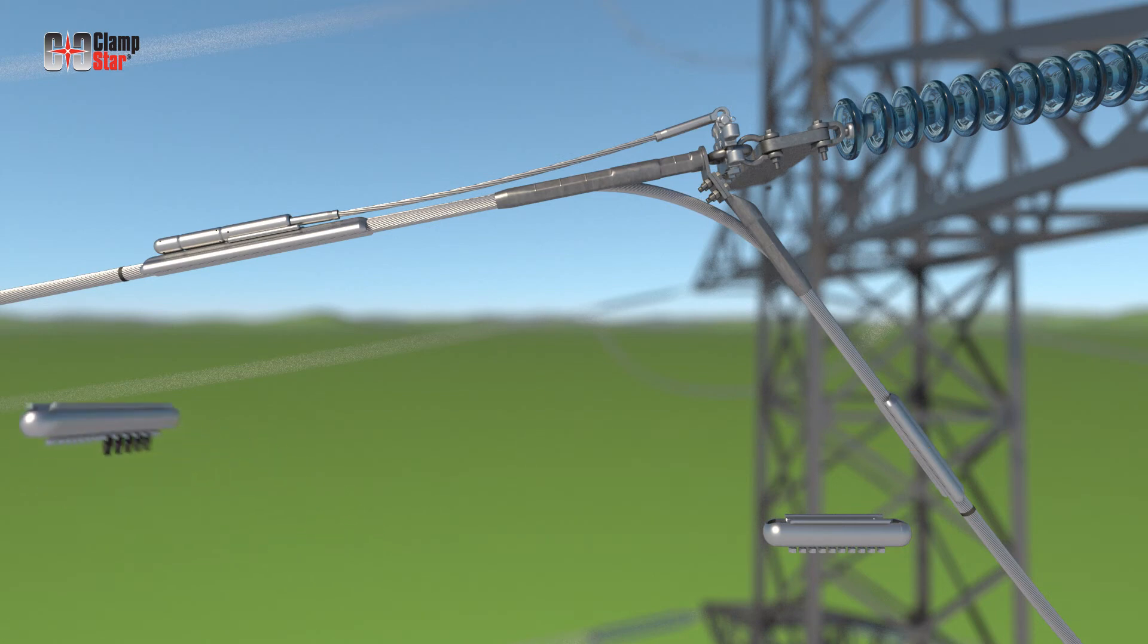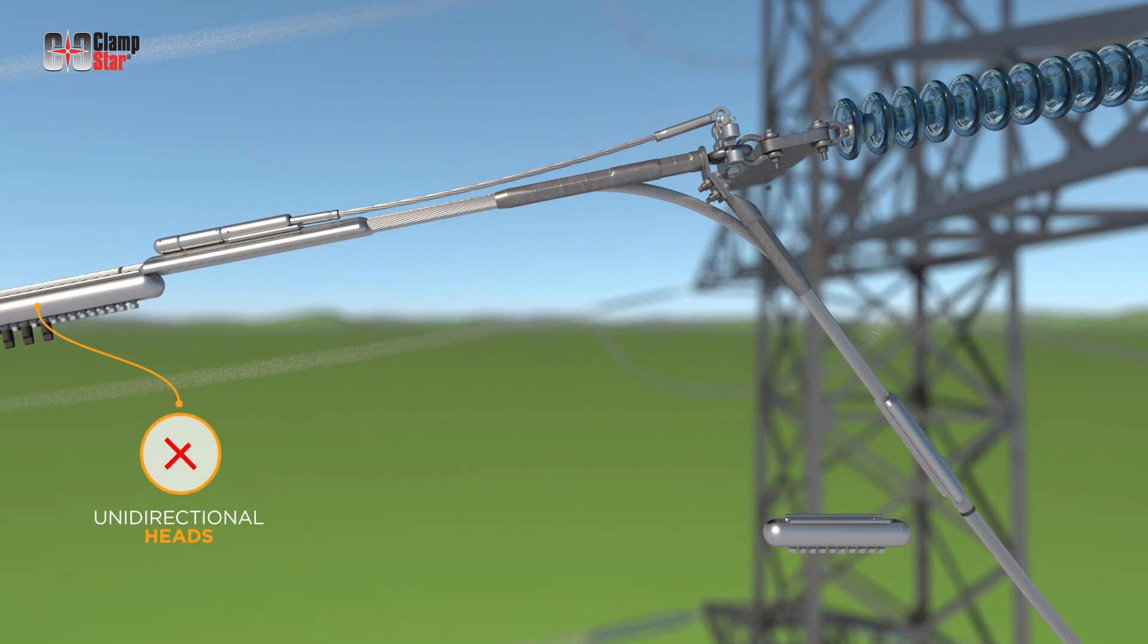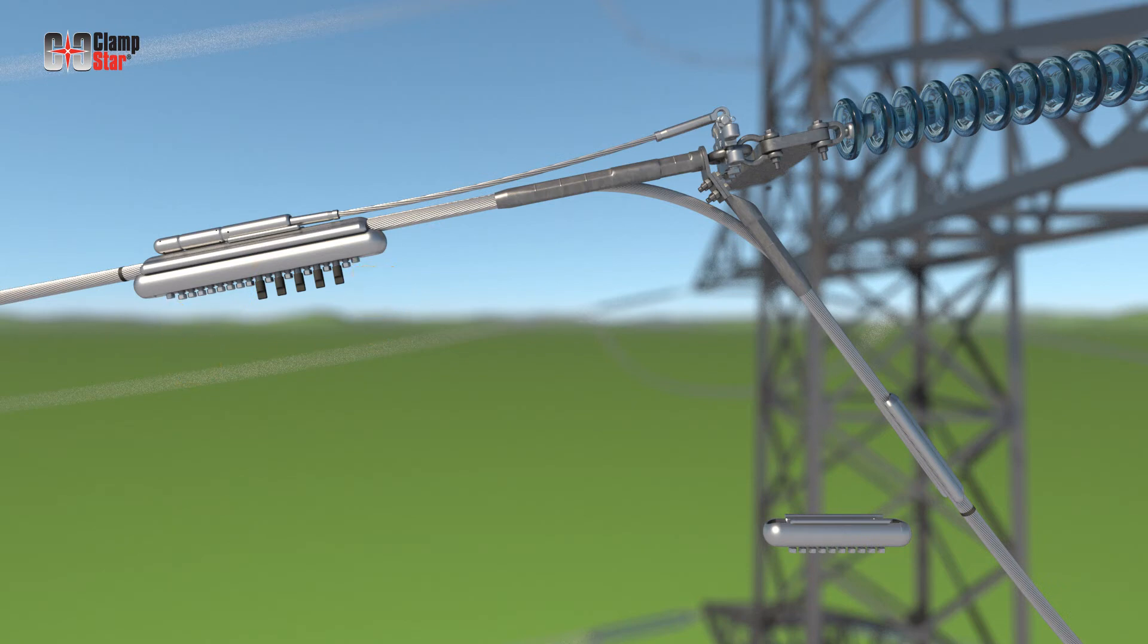Slide the tension span head, which will only start in one direction, into the tension span body until it hits the stop point. Hand tighten one or two torque limiting fasteners to temporarily hold the head in place to prevent the head from sliding out.